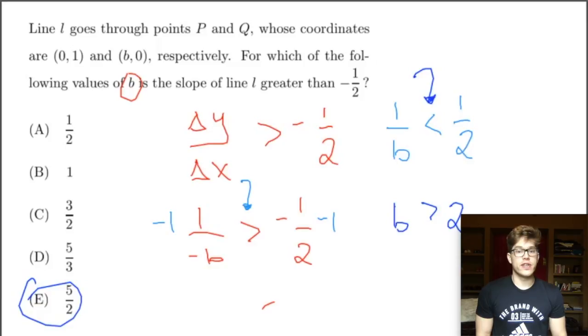So our answer here is E, 5 halves. Another thing I would say about this problem is even if you're not sure how to set it up or how to solve, and if you were to totally guess, I would hope that you would either guess A or E just because this problem is asking for something that is greater than -1/2 for what values are slope. And so our answer needs to be one of the extremes. So 1/2 and 5/2 are the extremes. So these are the two I would be choosing between if it was a blind guess. Of course this is how you solve the problem and our answer is E, 5 halves.